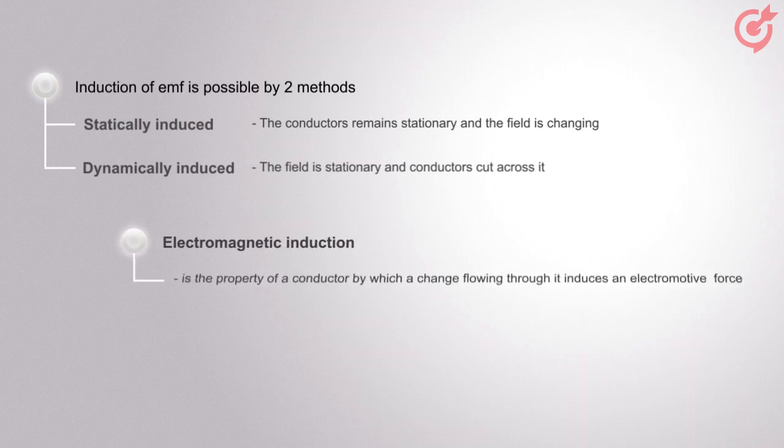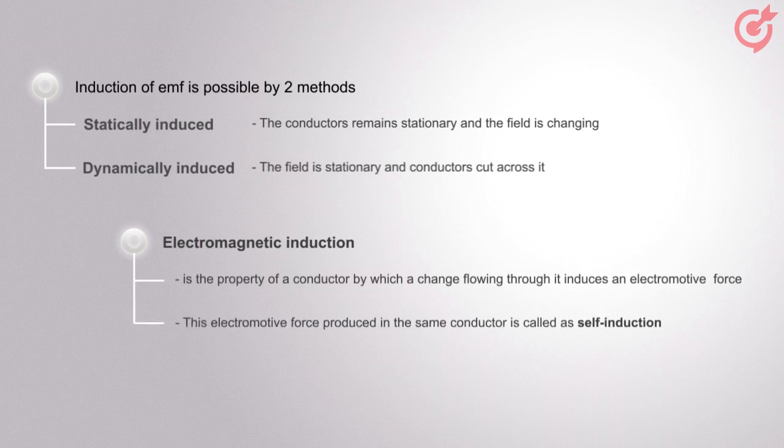Electromagnetic induction is the property of a conductor by which a change in current flowing through it induces an electromotive force. This electromotive force produced in the same conductor is called self-induction, and in any nearby conductors is called mutual induction.